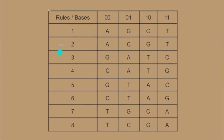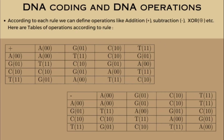These are basically 8 rules. According to these rules, we convert binary values 00, 01, 10, and 11 to DNA bases. Now let's see how DNA operations work. There are mainly 3 types of operations we can perform on DNA bases: addition, subtraction, and XOR. Here is the operation table according to rule 1, and we get the same operation tables with different rules from 1 to 8.